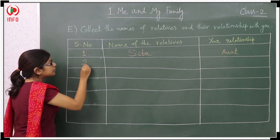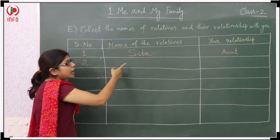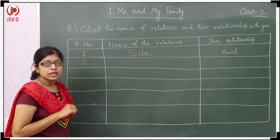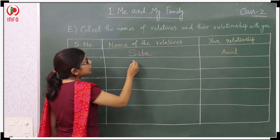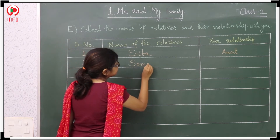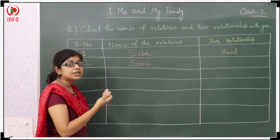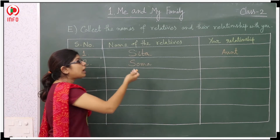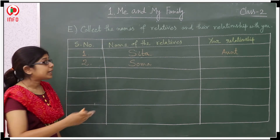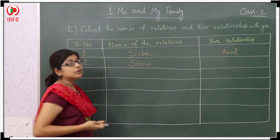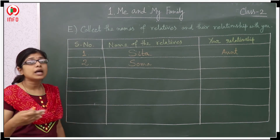Next one, that means serial number 2. So I have to write the name here. I am writing here Soma. Like that you also have to write their names — the different relatives' names — and what is the relationship between them and you.